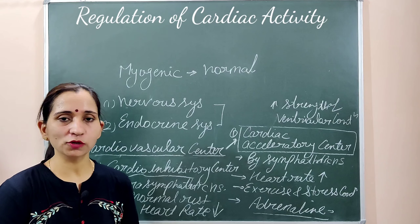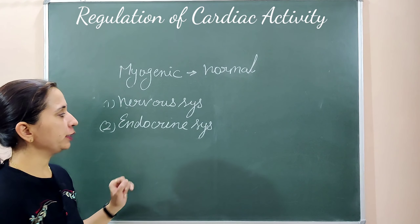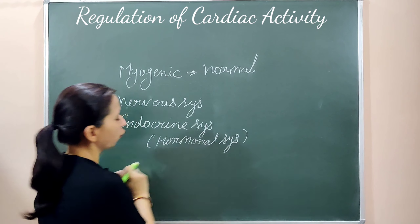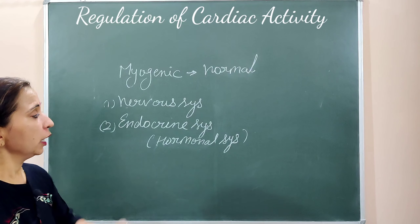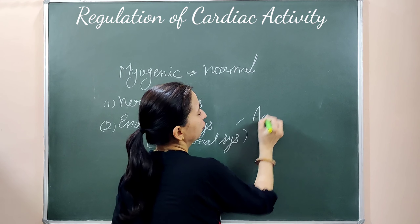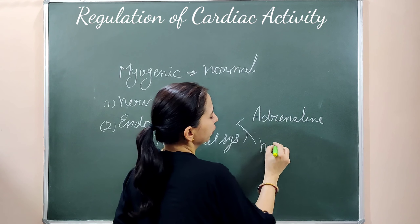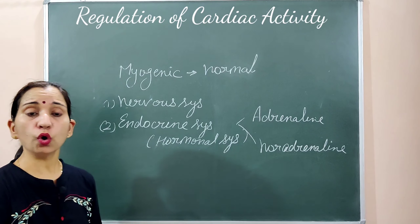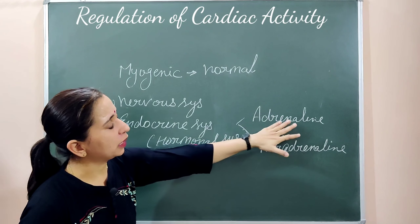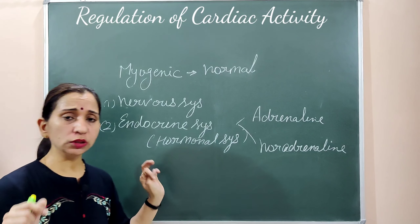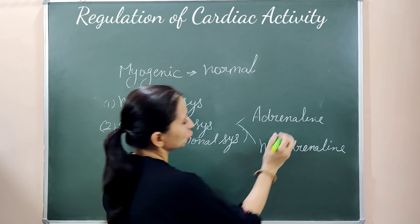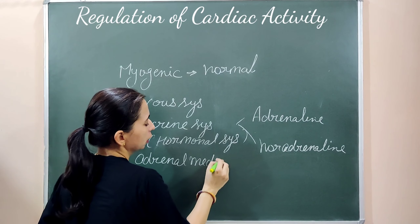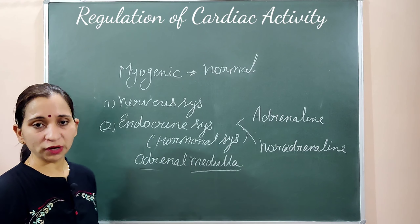Now let's see how the endocrine system controls cardiac activity. This is also called the hormonal system because hormones are involved. There are two types of hormones: adrenaline and noradrenaline, also known as epinephrine and norepinephrine. These two hormones are secreted by the adrenal medulla and work to control cardiac activity.